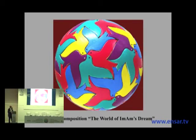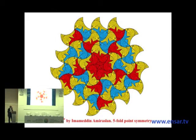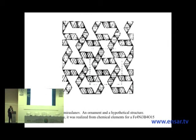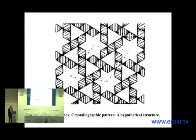Those who want to know his multidirectional work can have a look at the book Azerbaijan Tessellation. I will give a few examples of Imamaddin's work: a spherical composition of the world; fishes by Imamaddin Amiraslanov having five-fold point symmetry; wolves; and an ornament and hypothetical structure by Imamaddin Amiraslanov. Subsequently it was realized from chemical elements — ferrum-4, nickel-3, boron-4, oxygen-15 — and the other crystallographic pattern is a hypothetical structure.